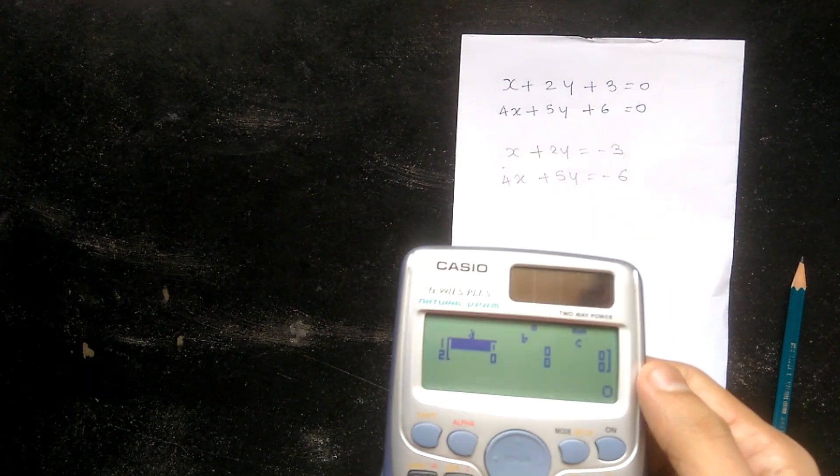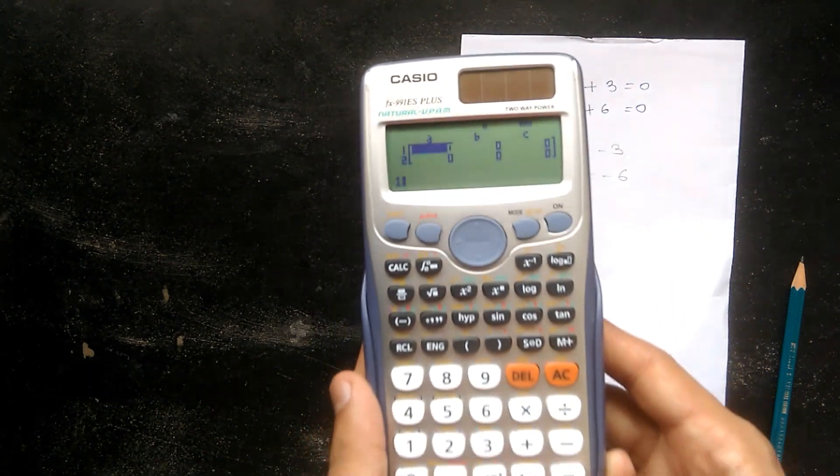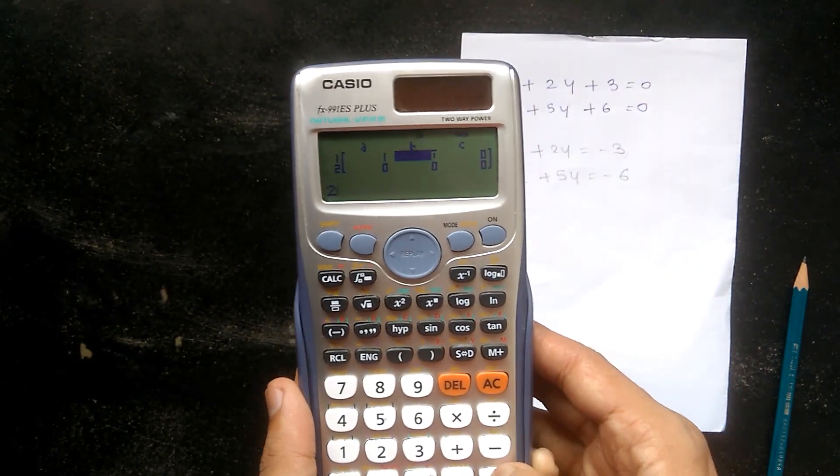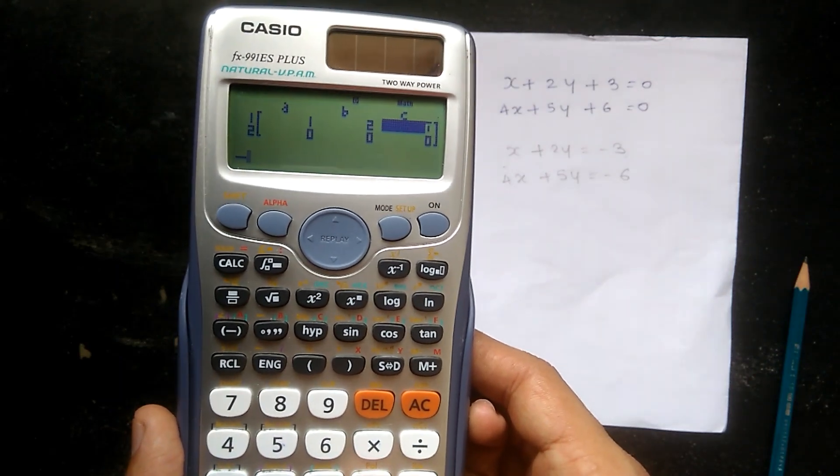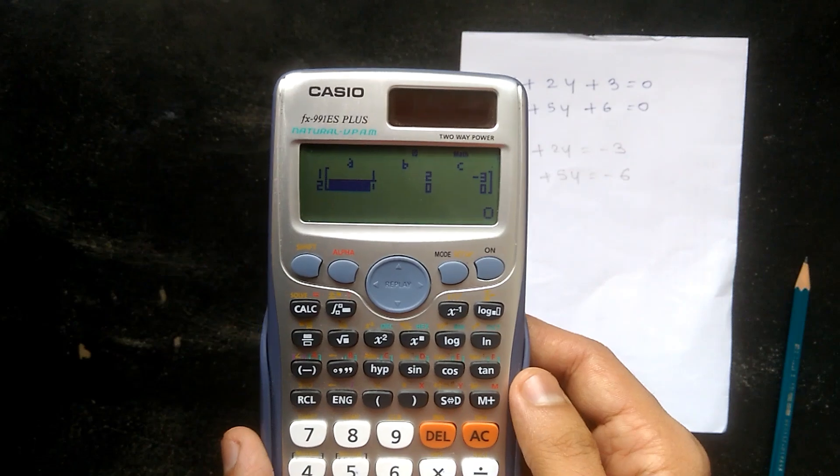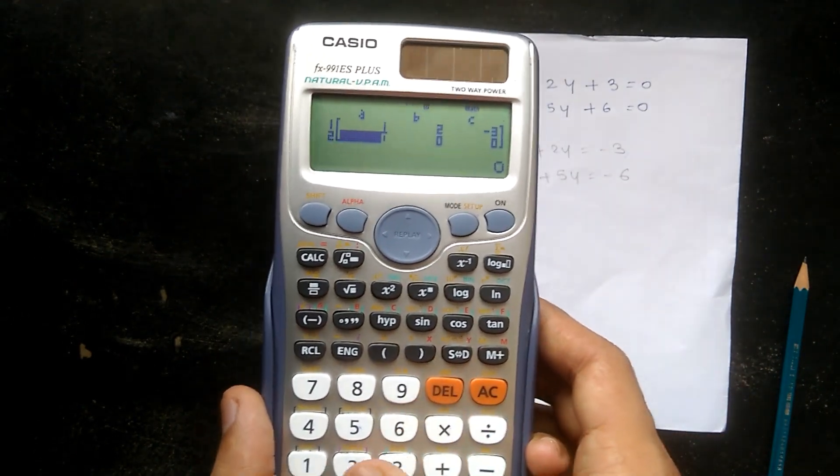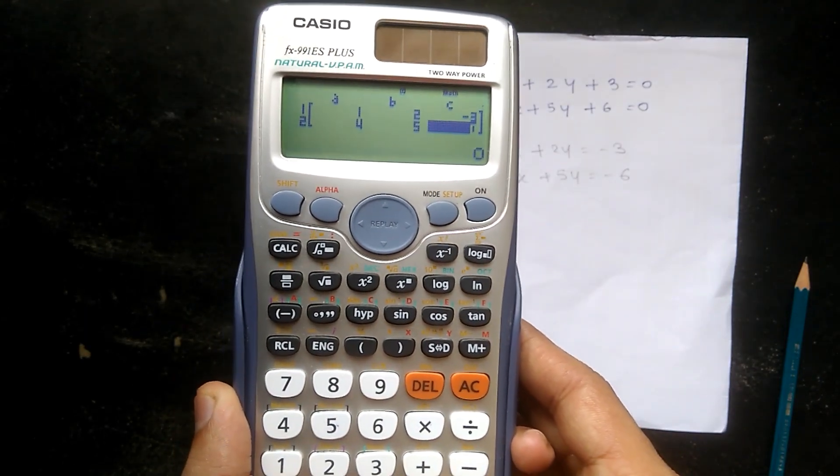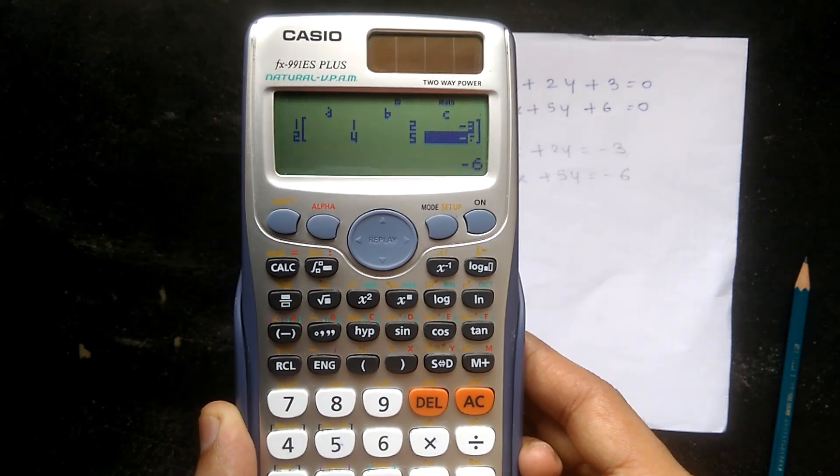So we have the values of the first equation as a equals 1, b equals 2, and c as minus 3. Then the second equation values are set into the second row: that is 4, then 5, and the third value is minus 6.